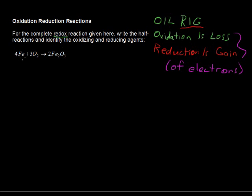So let's color code the half reactions for this complete redox reaction. The complete reaction is 4Fe plus 3O2 yields 2Fe2O3, and this is part of the process of rust. There's always water involved as well, but we've simplified it here.